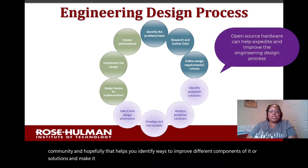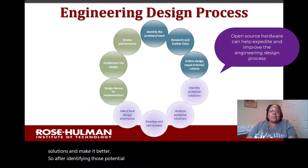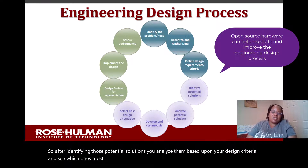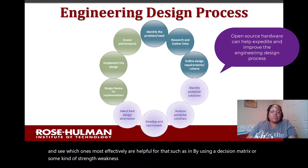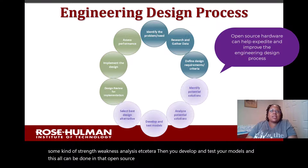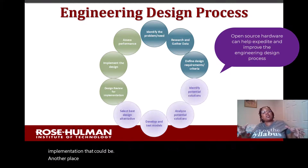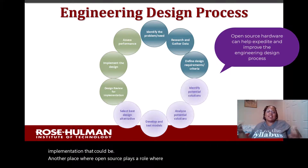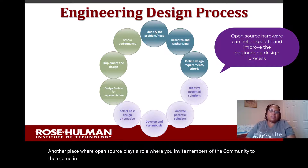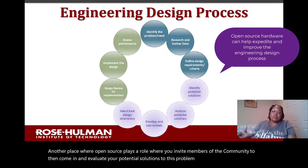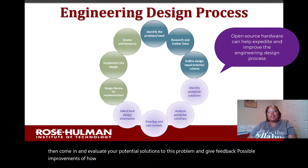After identifying potential solutions, you analyze them based upon your design criteria to see which are most effective — for example, using a decision matrix or a strength-weakness analysis. Then you develop and test your models, all of which can be done in an open source format. You select your best design alternative based on testing, then do a design review for implementation — another place where open source plays a role, where you invite community members to evaluate your potential solutions, give feedback, and suggest improvements before you implement your final design.